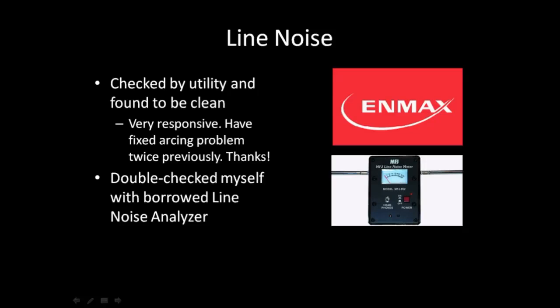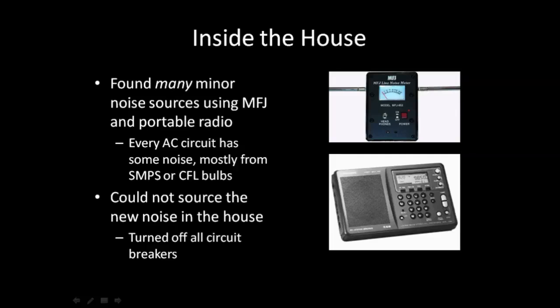I also double-checked this myself with a borrowed line noise analyzer. This little MFJ unit tunes to 135 MHz and it's an AM receiver. The great thing about it is it's got a built-in dipole antenna so it's very directional, but walking around my neighborhood, I could tell that my noise was not coming in as typical power line noise.